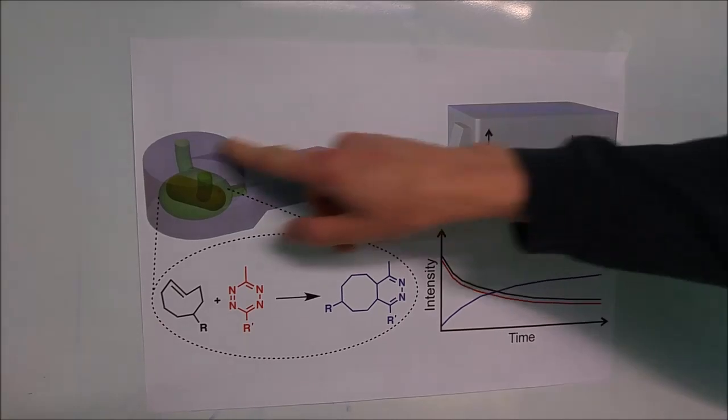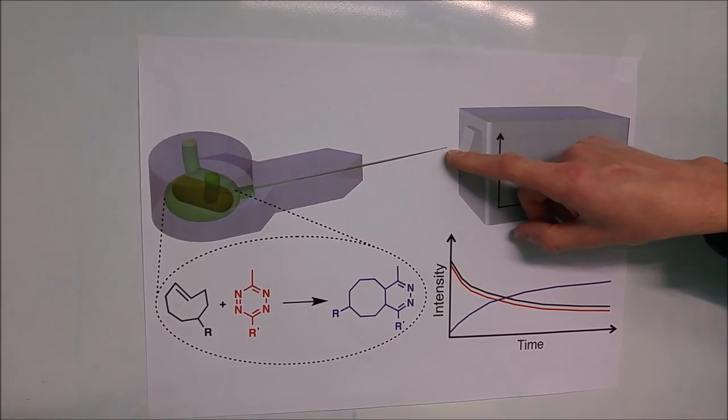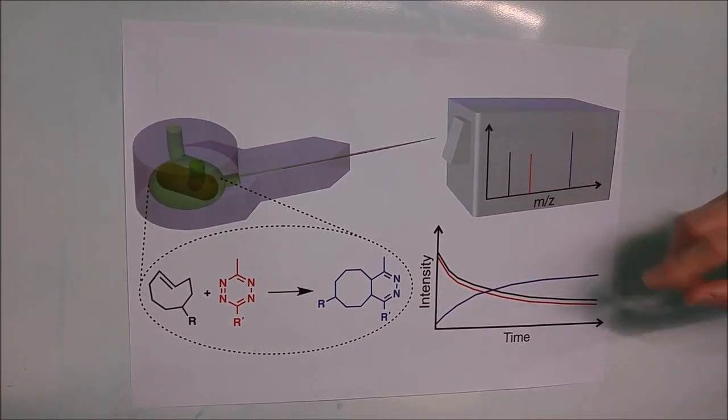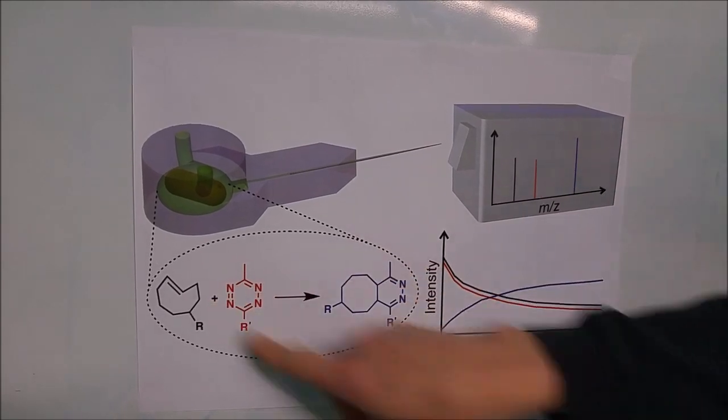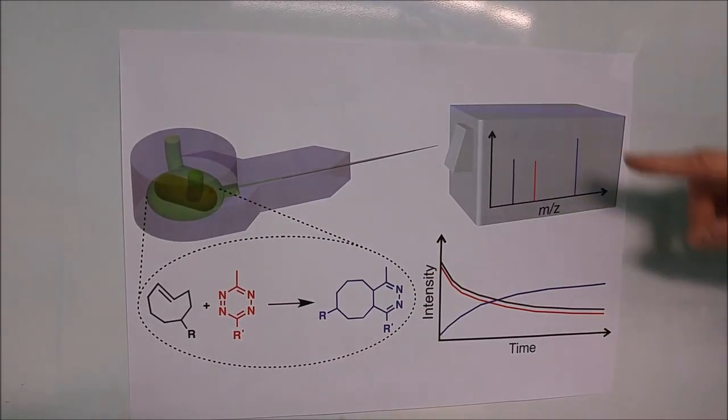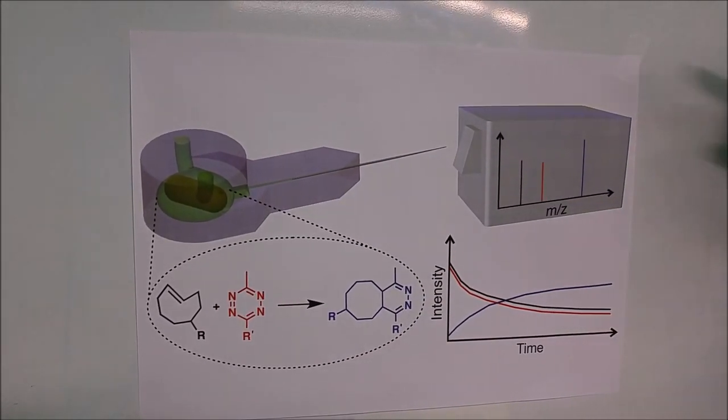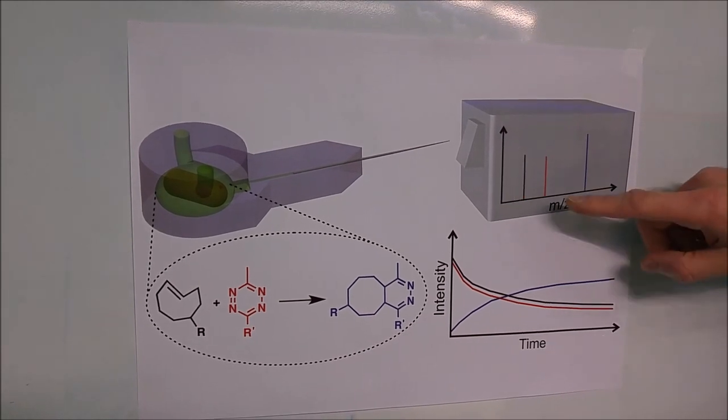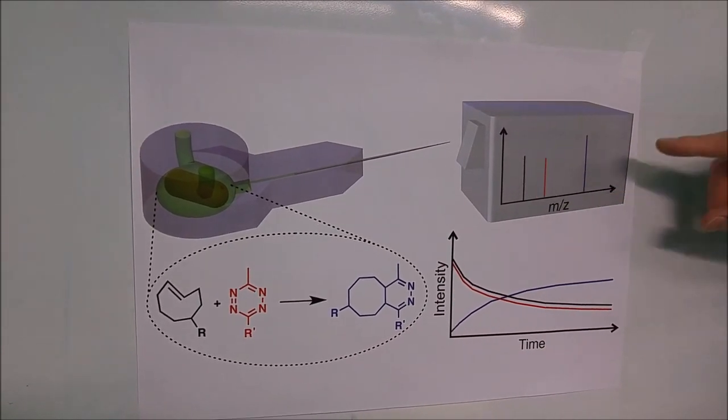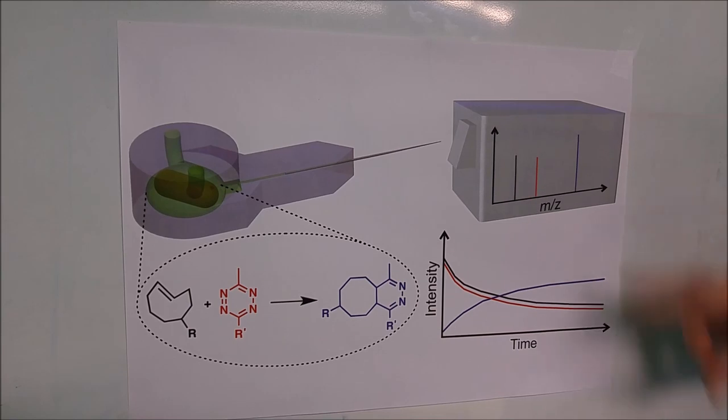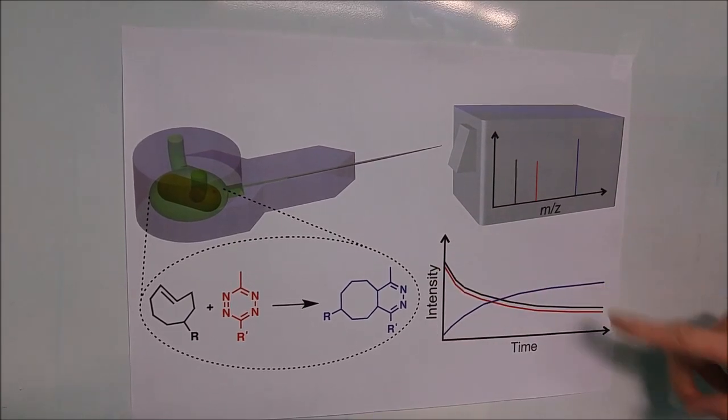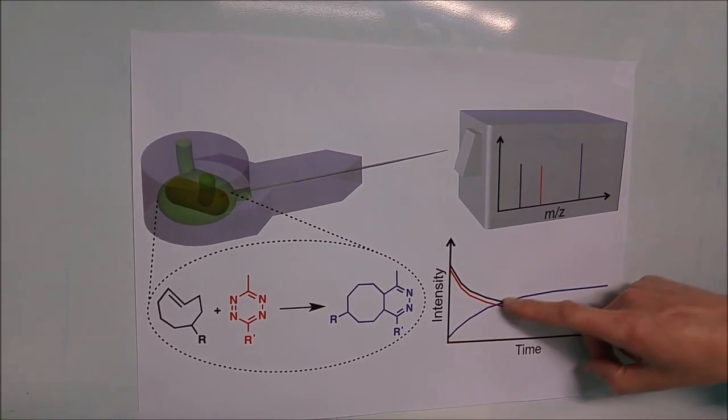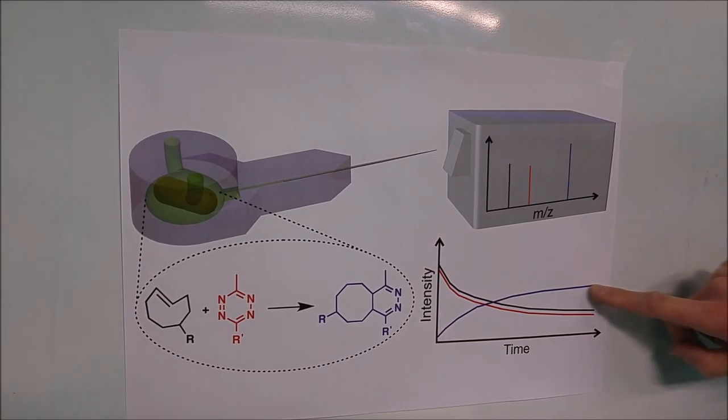So we attach this micro-reactor using the nano-electrospray needle to a mass spectrometer, so that we can monitor this reaction online with the mass spectrometer. What it means is that we can monitor how these different species of the reaction evolve during time and we can plot these diagrams showing for example how the product increases over time.